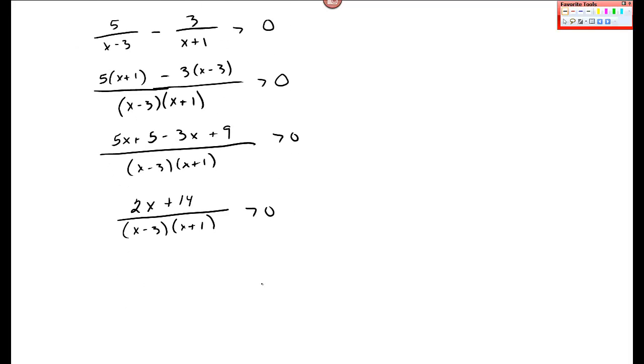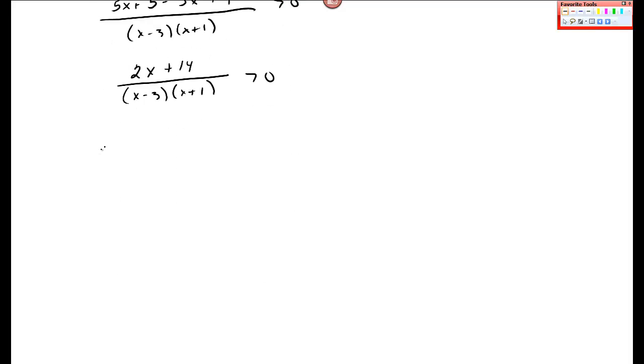Okay, so when I look at this function, the function that I'm looking at, I have f of x is this 2x plus 14 and x minus 3, x plus 1. Okay, discontinuous, points of discontinuity at x equal to 3 and negative 1.